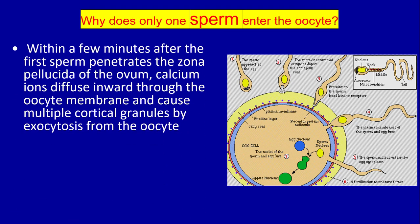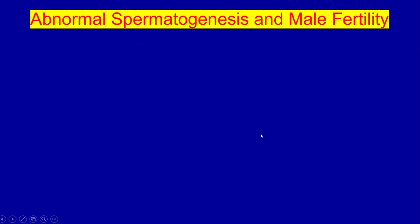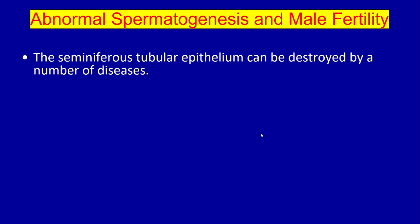Why does only one sperm enter the oocyte? Within a few minutes after the first sperm penetrates the zona pellucida, calcium ions diffuse inward through the oocyte membrane and cause multiple cortical granules to be released by exocytosis from the oocyte around this membrane, preventing further entry of any other sperm. These granules contain substances that permeate the zona pellucida proteins and prevent binding of additional sperm.